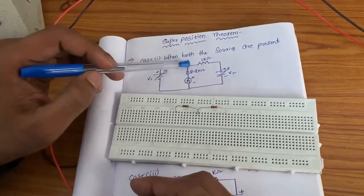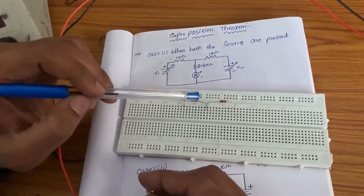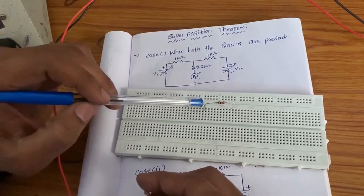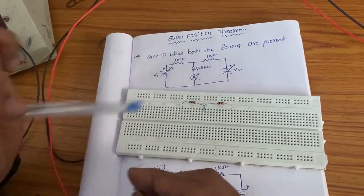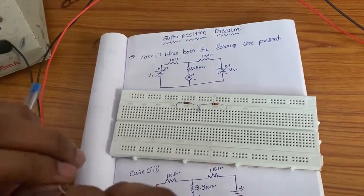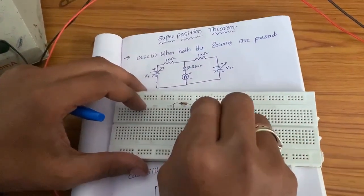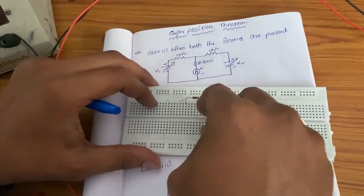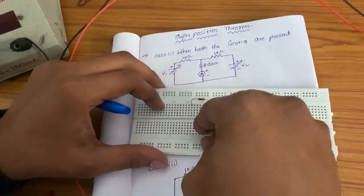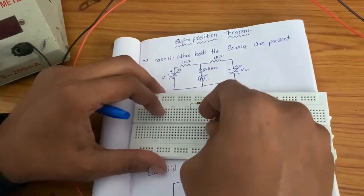These three terminals should all connect to the vertical. The 1 kilo ohm second terminal and 1 kilo ohm first terminal are already connected. Now I am connecting the 2.2 kilo ohm first terminal like this.